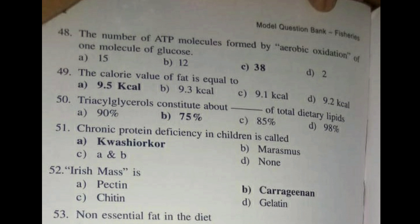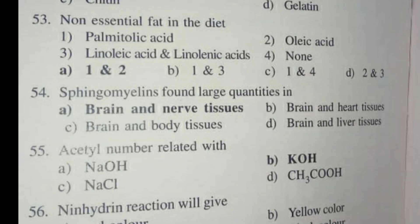Question 53 - Irish moss is. The answer is Carrageenan. Question 54 - Non-essential fatty acid in the diet. The answer is 16:1, meaning Palmitoleic acid and Oleic acid.